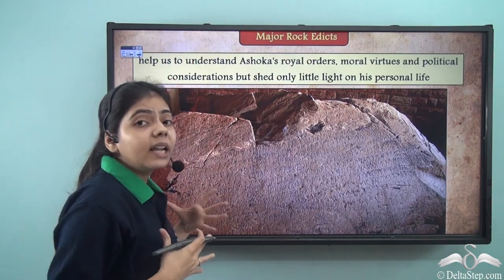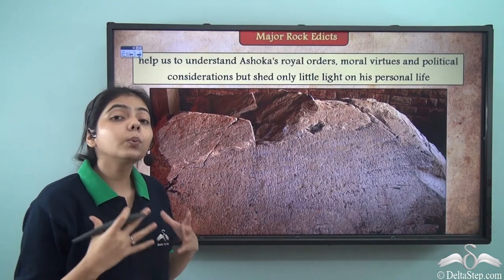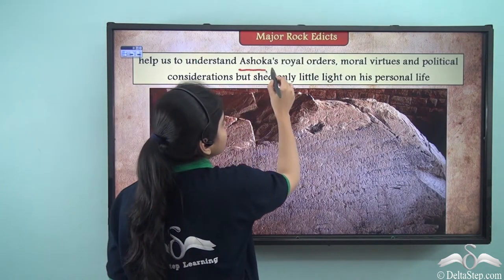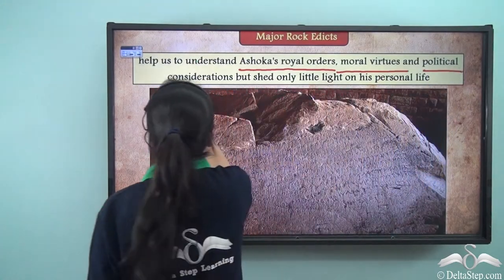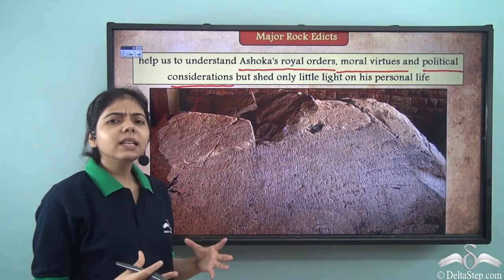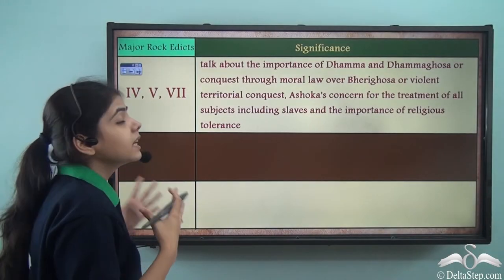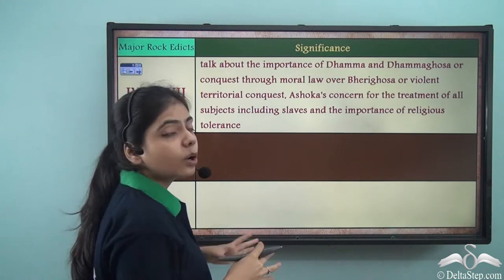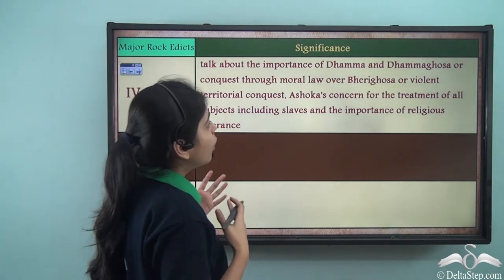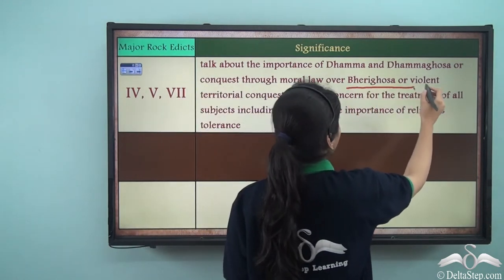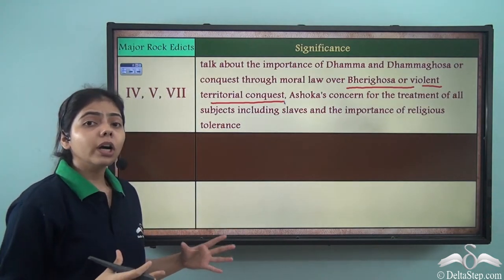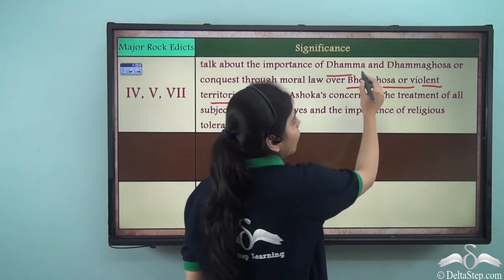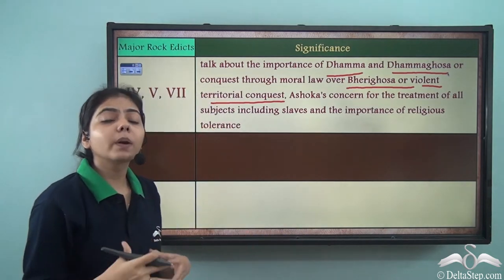The major rock edicts help us understand Ashoka's royal orders, moral virtues, and political considerations, though they shed only a little light on his personal life. Major rock edicts 4, 5, and 7 talk about the importance of Dhamma and Dhamma Gosha — conquest through moral law — over Bheri Gosha, or violent territorial conquest. As we know, Ashoka gave up Bheri Gosha and instead took up Dhamma Gosha, spreading the moral laws of Dhamma.